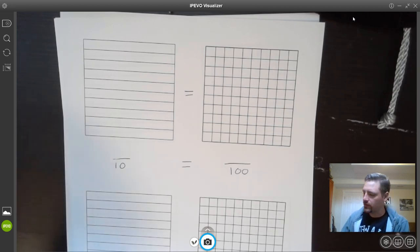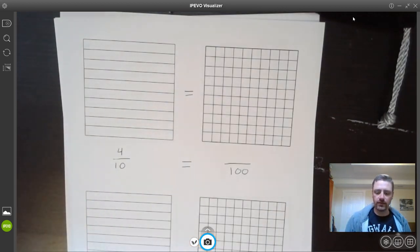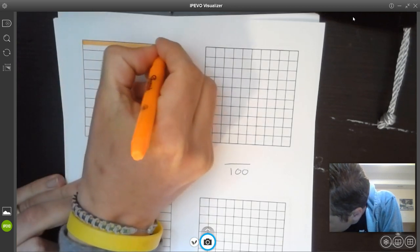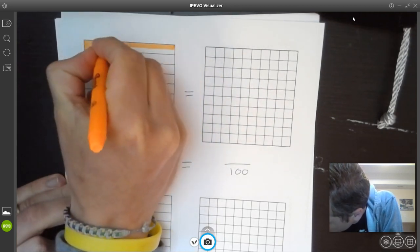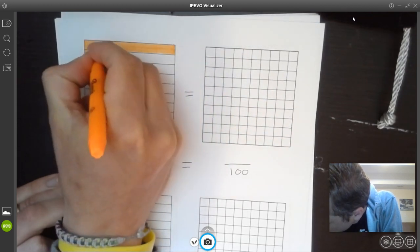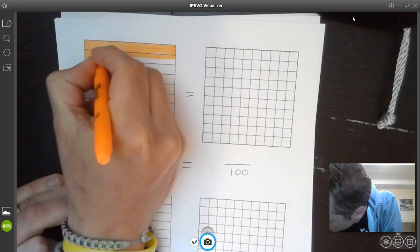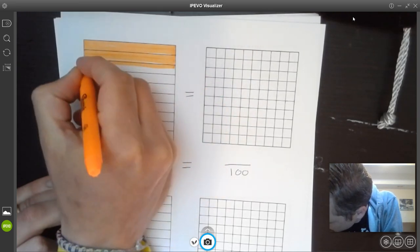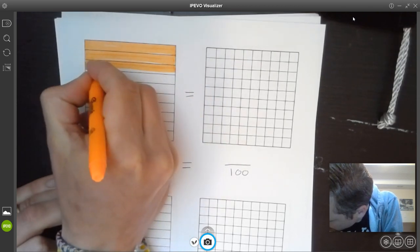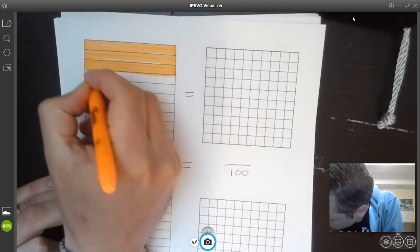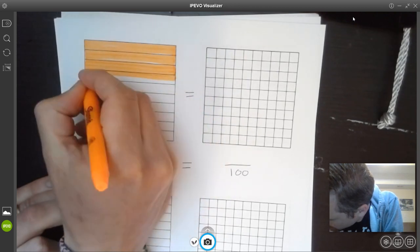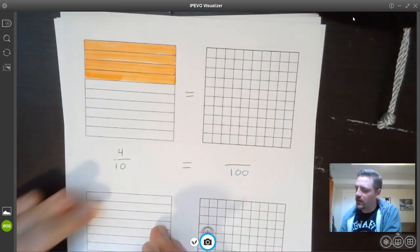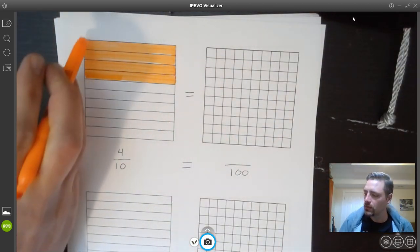Let's say we wanted to fill in 4 tenths. Well, you would do it like this. You could just color them in. I'm going to try to be pretty neat as I do this. I've got 2 there, 3 tenths, and now I have right there 4 tenths colored in.